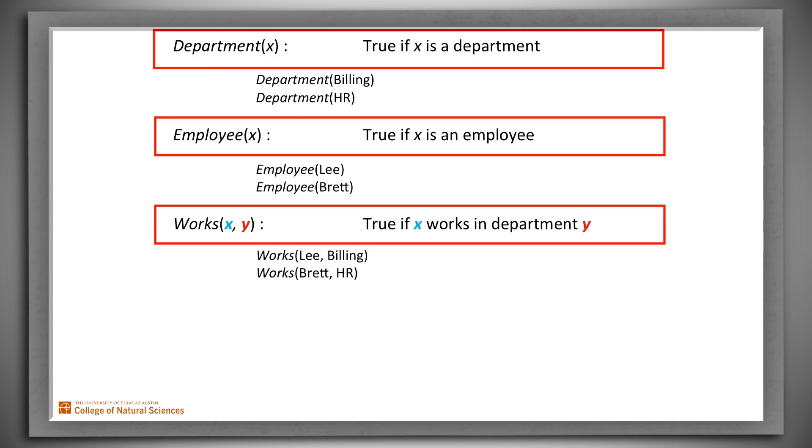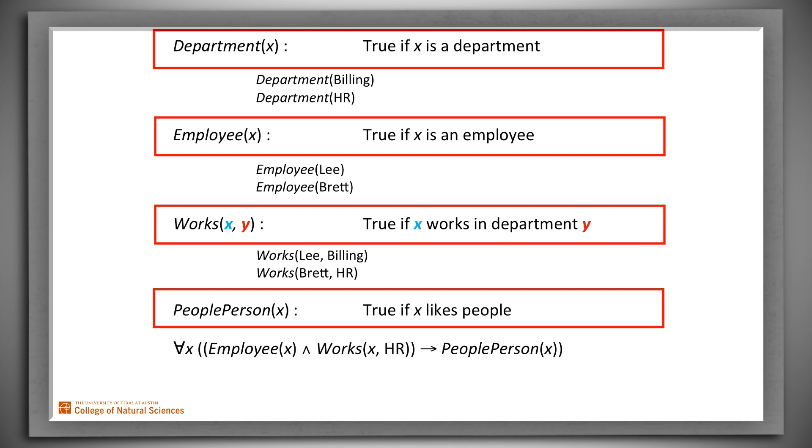Now let's return to our correct example and complete it. We add a fourth definition, this one for the predicate PeoplePerson. And we add a premise, a universally quantified statement, about employees in the HR department. Notice that when we write quantified statements, we also have to make use of variables. Each quantifier introduces a new variable. We've used X. Again, it's okay that we've used a variable that we've used before. The scope of this variable is the quantified statement, so it doesn't conflict with anything outside it.